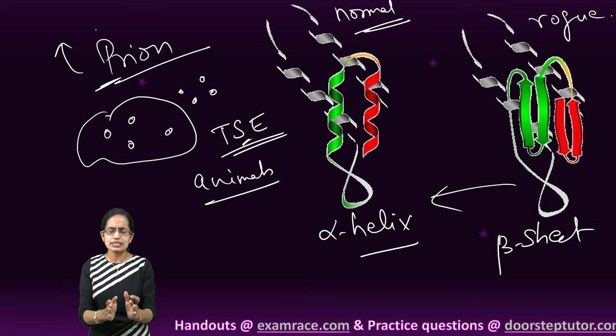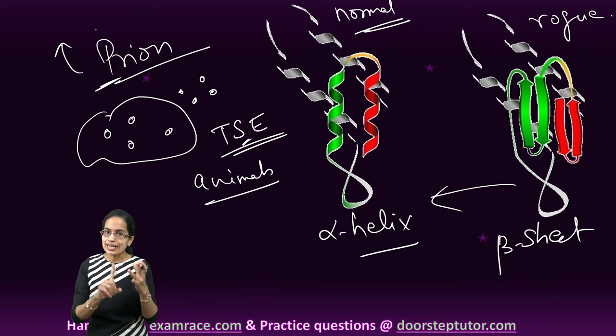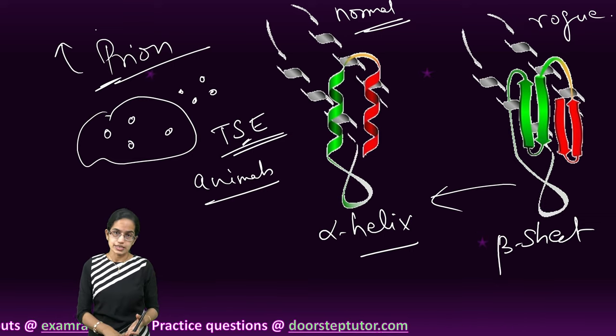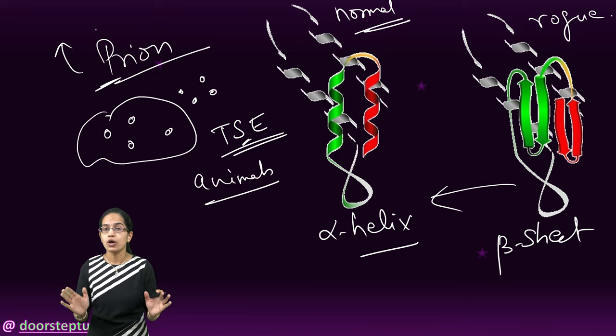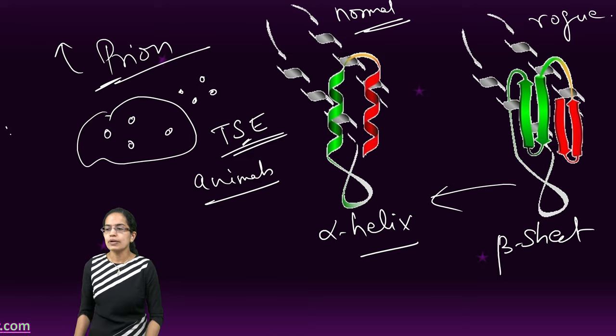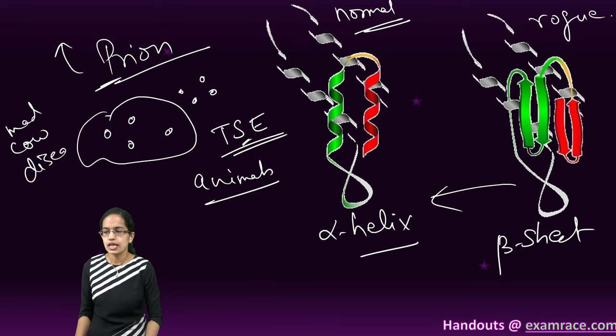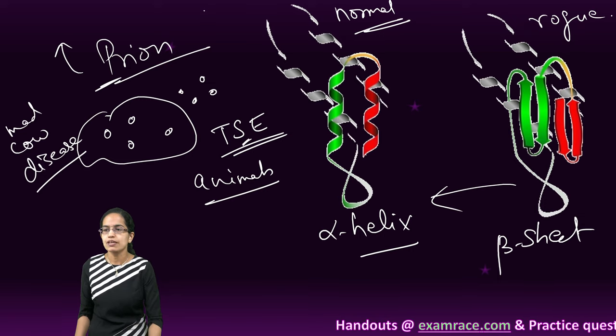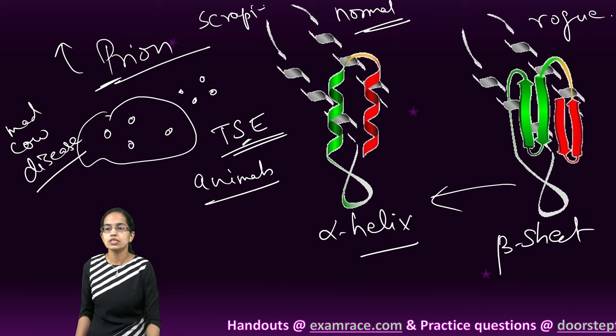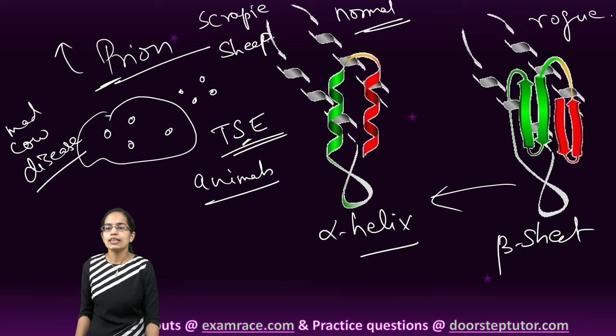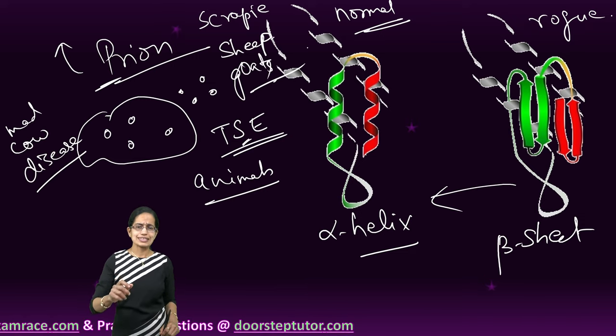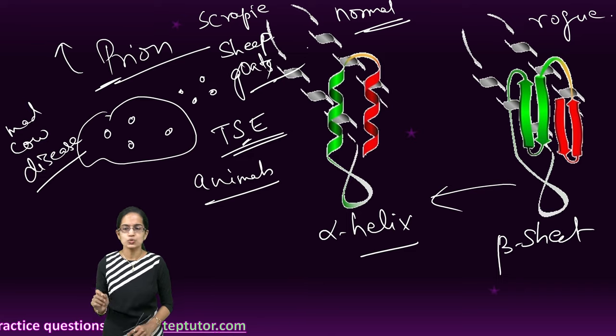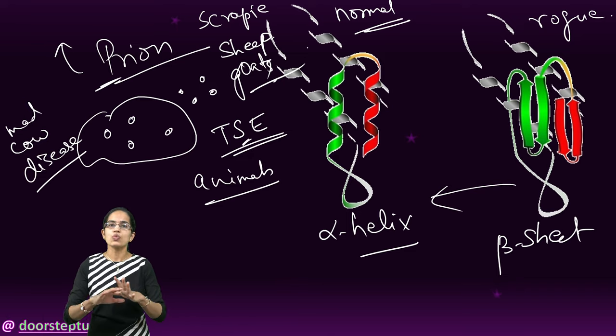Prions are highly resistant to heat, any kind of chemicals, or radiations that are there, and therefore remain persistent for a very long duration. The other common diseases with prions that are seen are mad cow disease in animals and scrapie, which is another common disease which was initially discovered in sheep and later on also seen in goats. So those are some of the common diseases mainly affecting the brain tissues and the brain cells.